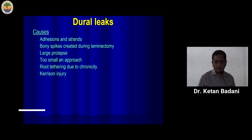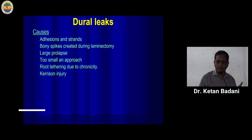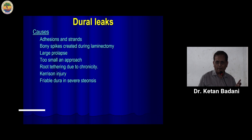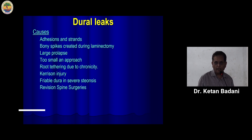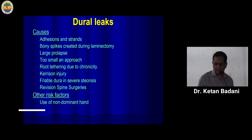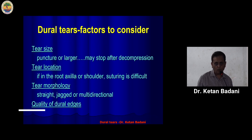Kerrison injury is one of the most common causes — if the dura gets caught in the side of the Kerrison and gets torn, most often this happens when there is a lot of blood and the field is not clear. In severe stenosis, you can have very friable, paper-thin dura that tears with even the slightest movement. Revision spine surgery is one of the biggest areas where dural tears commonly occur. Studies have also shown risk factors like use of a non-dominant hand or upper lumbar discs, which tend to cause more dural tears.